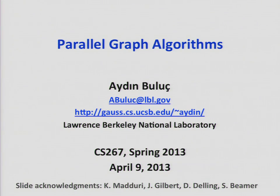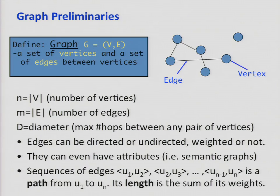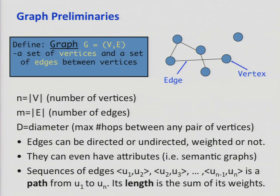Thank you Jim for the introduction and welcome everyone. As Jim said, I'm a scientist at the Lawrence Berkeley Lab. So what is a graph? In a nutshell, a graph is a discrete data structure — as simple as a bunch of vertices and edges. Edges connect vertices and encode binary relationships.